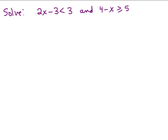We're going to solve this compound linear inequality. We have 2X minus 3 is less than 3 and 4 minus X is greater than or equal to 5. What we're looking for are the solutions that work in both inequalities, so we'll solve one at a time.